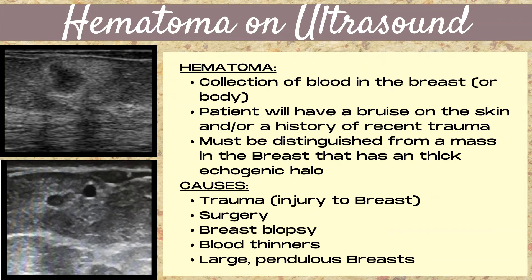Next, let's talk about hematomas. A hematoma is a collection of blood in the breast or the body. The patient will often have a bruise on the skin or a history of recent trauma. Most importantly, a hematoma must be distinguished from a mass in the breast that has a thick echogenic halo. Causes of hematoma include trauma or injury to the breast, surgery, breast biopsy, a patient taking blood thinners, or large pendulous breasts.